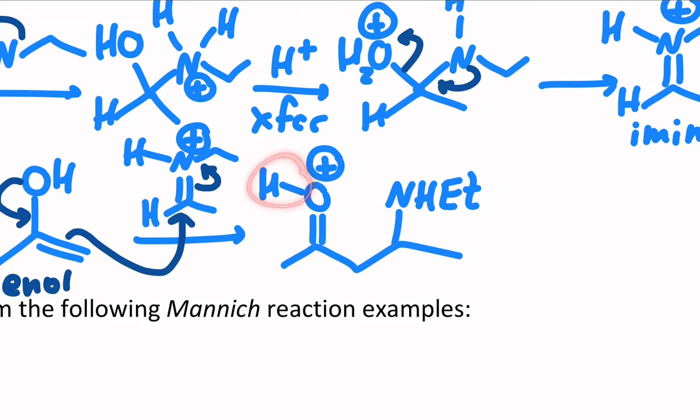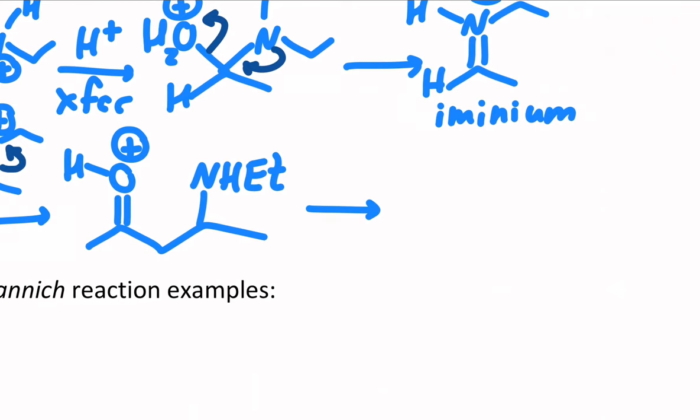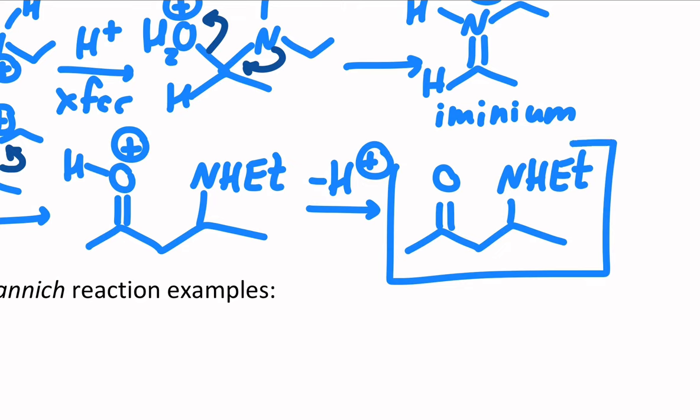And that's basically the product. All that's left is we have to lose that H. And we can put H's on and take them off all over the place in these acid-catalyzed mechanisms. So anything could take that H away. And then you regenerate the ketone, and now you have a secondary amine, in this case, attached at the beta position. Your beta amino ketone.